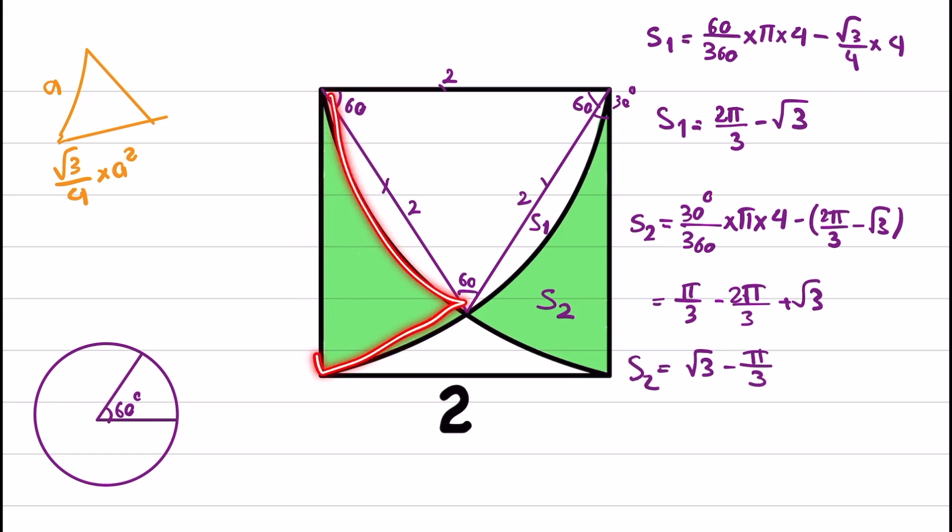Now, looking at the left-hand side, we have another region called S3. You can apply the same steps to obtain S3, which has the same area as S2. Therefore, the total area is 2 times S2, which equals 2√3 minus 2π/3.